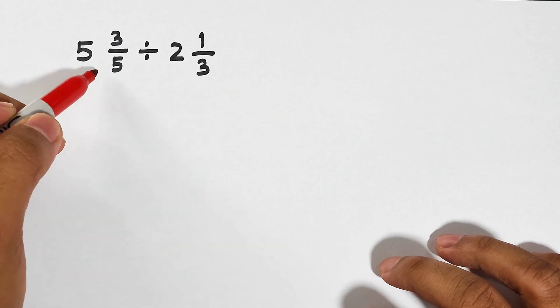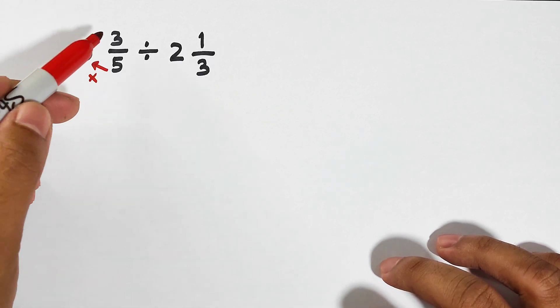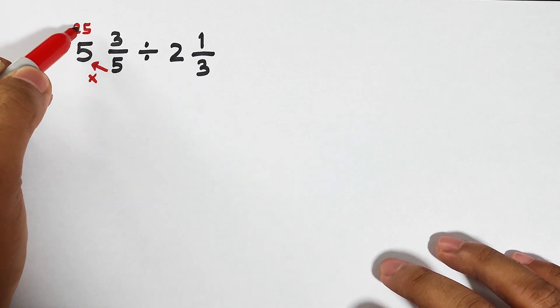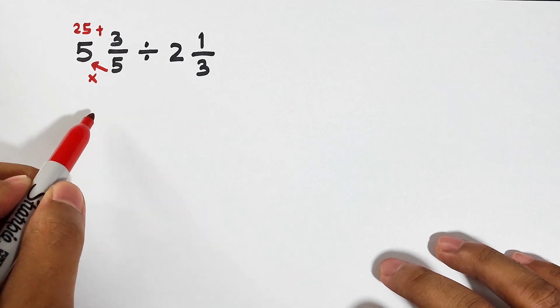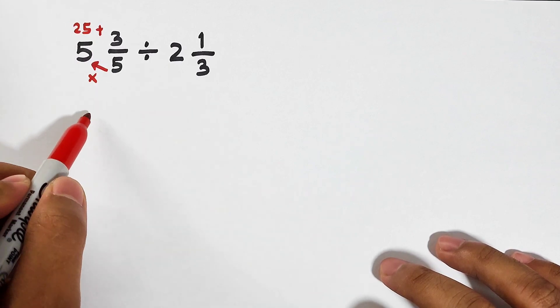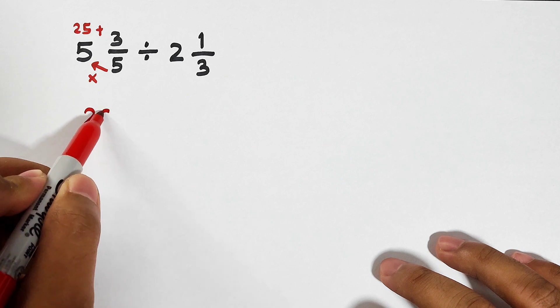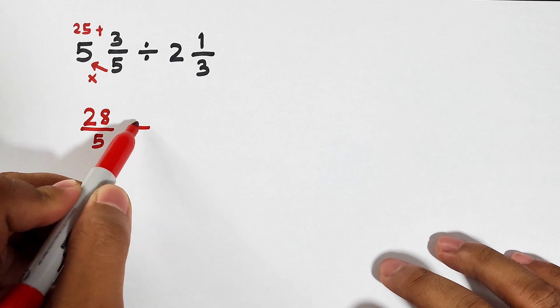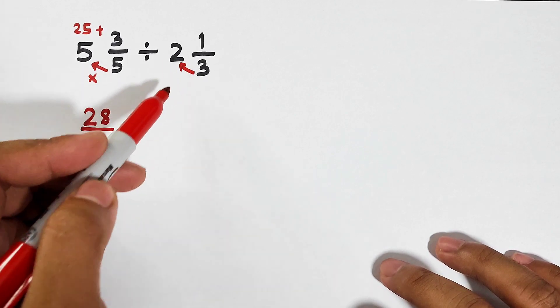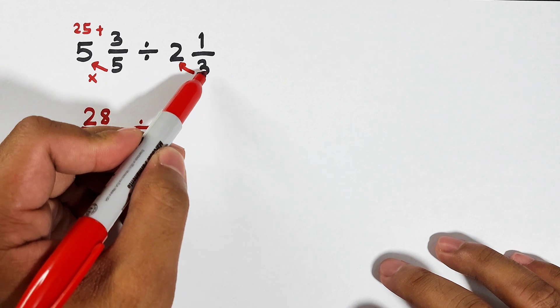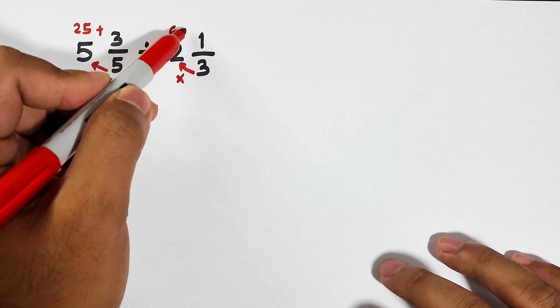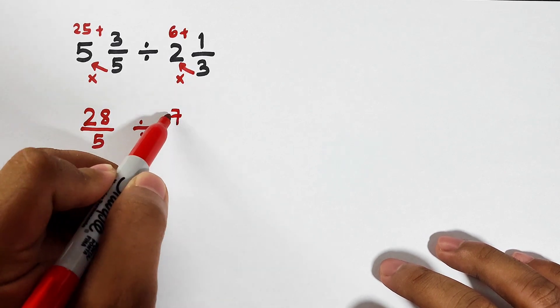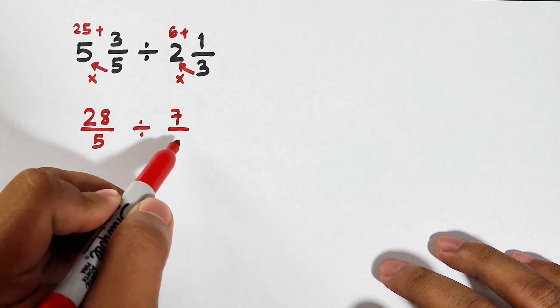Same process. Convert this first into improper fraction. 5 times 5 is 25, add 3, that is equal to 28. 28 over 5. Copy the division sign. Convert this one into improper fraction. 3 times 2, that is equal to 6, plus 1, that is equal to 7 over 3.